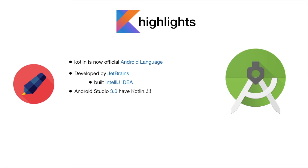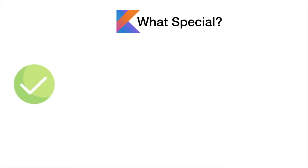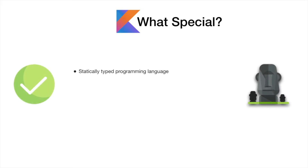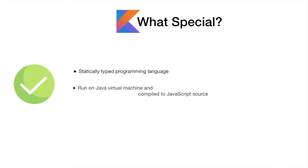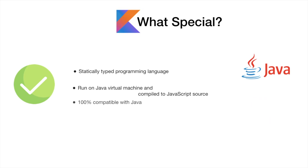If you are interested in iOS or Kotlin, you can click on Kotlin. It is open source. In Kotlin, it is special — it is a statically typed programming language. It runs on the JVM, which is the Java Virtual Machine, and we can also compile to JavaScript. The main thing is that it is 100% compatible with Java, so if you are familiar with Java, you can easily move to Kotlin.